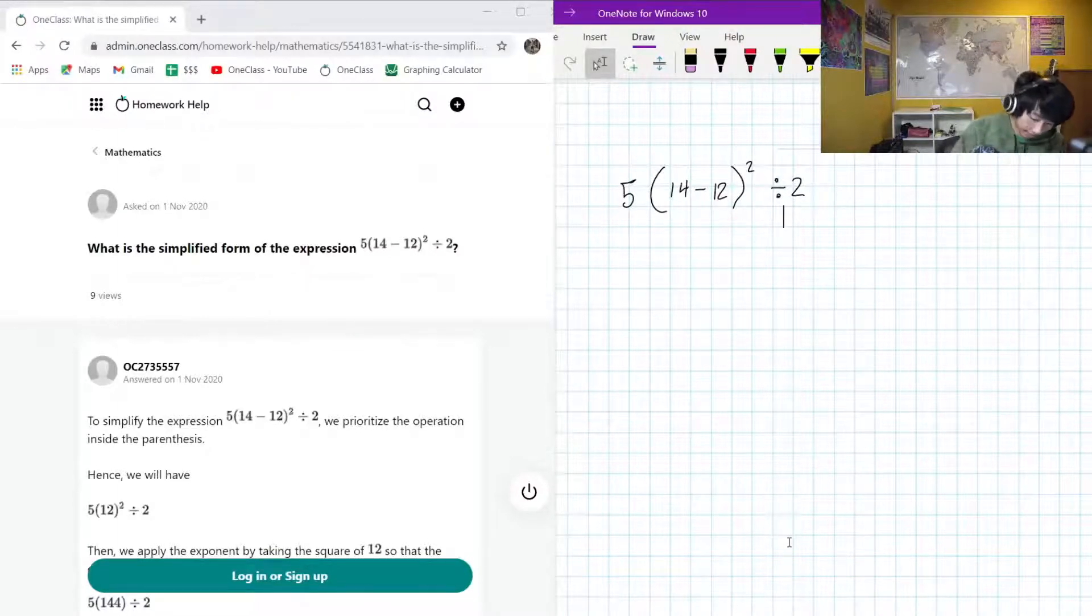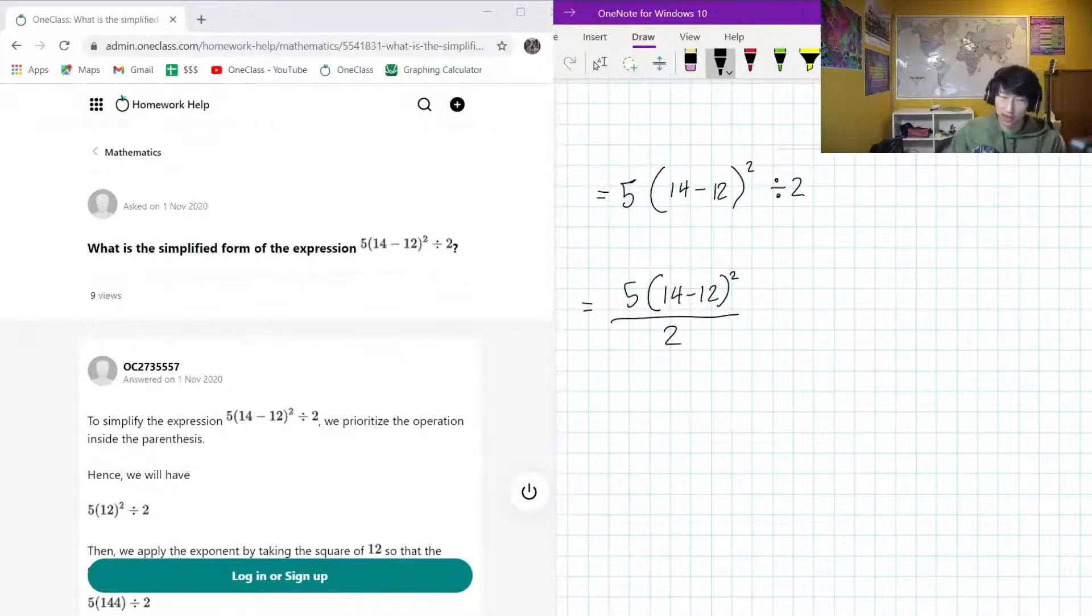So instead, the first thing that I want to do is write 5 times 14 minus 12 squared, all divided by 2 as a fraction instead of as a divide symbol. It just makes things a little bit easier.